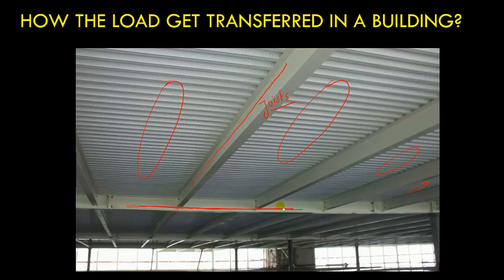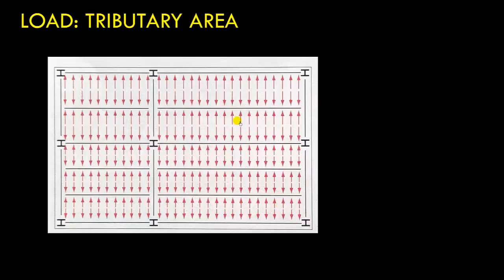One question here is how we can calculate the load on joists and similarly how we can calculate load on girders. For the calculation of load on beams we use a concept of tributary area. So let us consider this part of the roof — whatever load we have in this span, we are going to divide it equally on the two beams. This means half of the load of this span is going to transfer to this side.